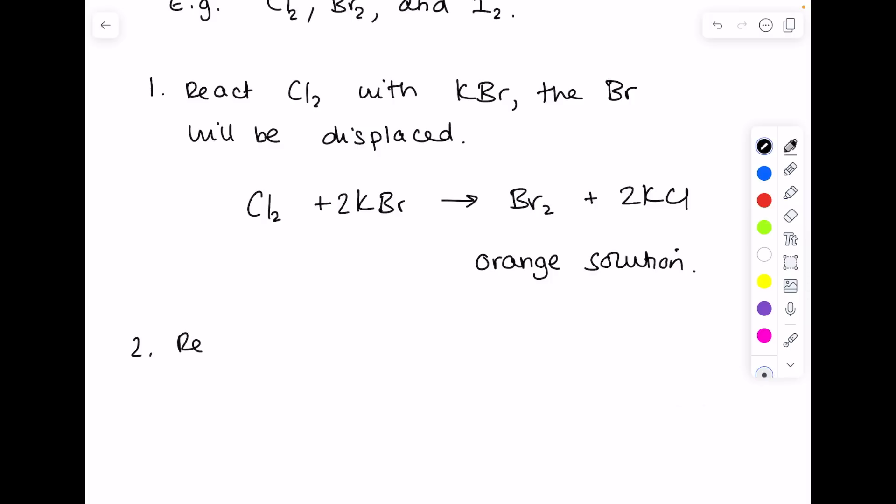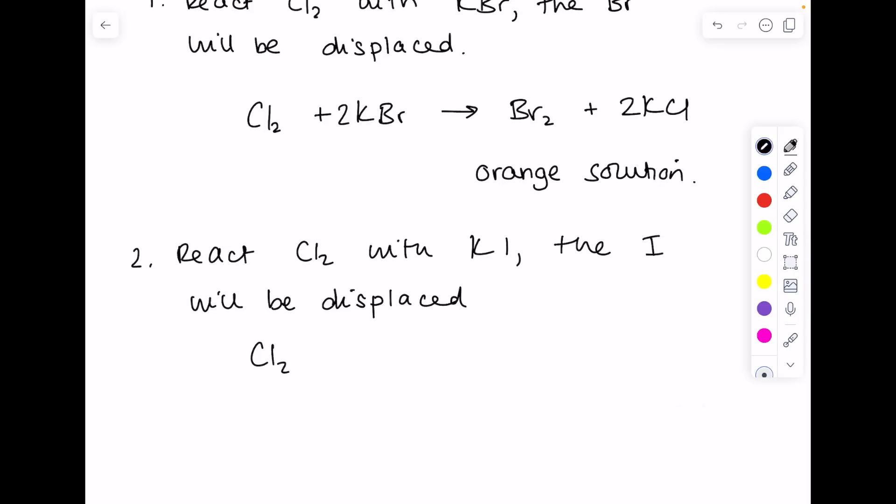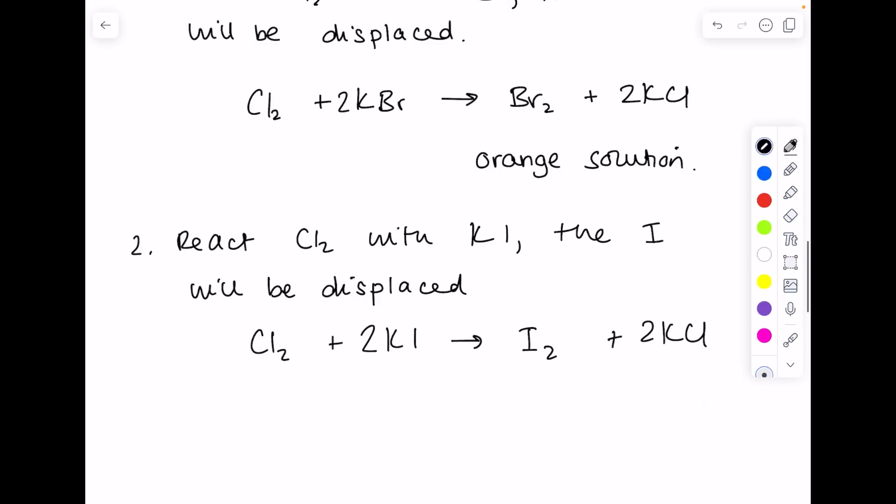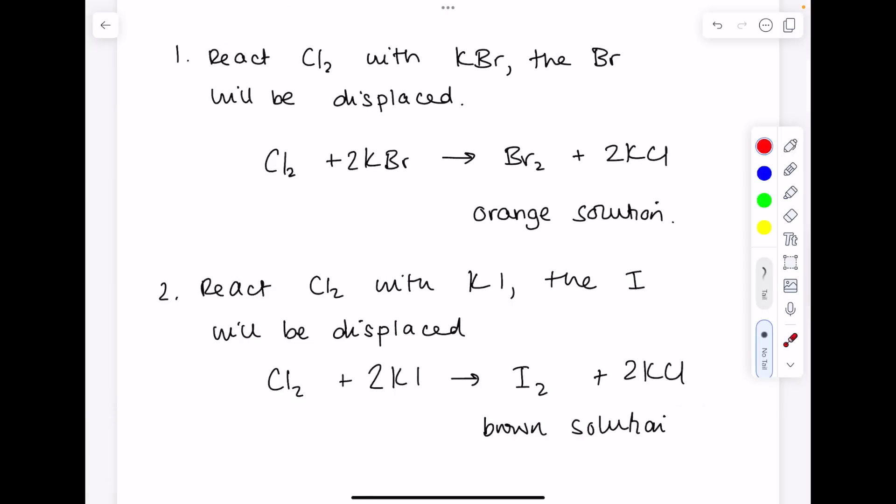What about reacting chlorine with potassium iodide? Chlorine reacts with potassium iodide to form iodine and potassium chloride, get it balanced. What will you see this time? You'll see a brown solution. You don't have to write a lot, but you do need to be prepared to draw this equation and state any observations.